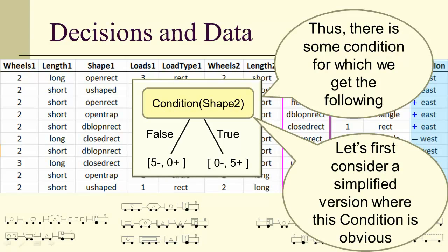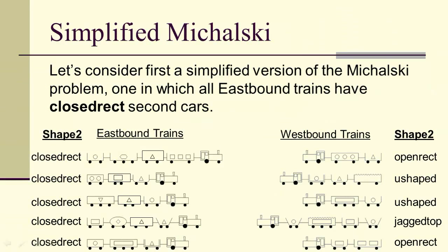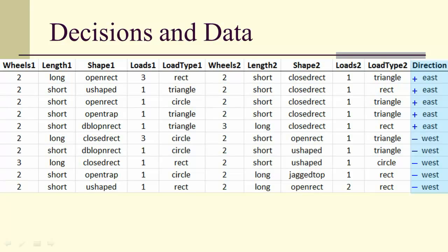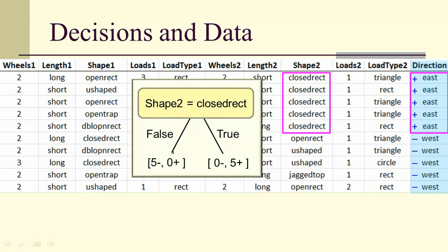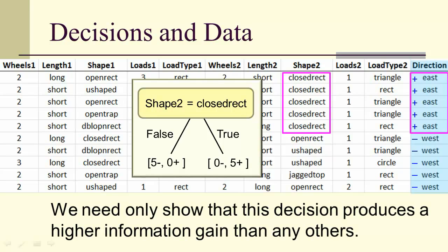The condition is going to be a little hard to come up with, so we're going to look first at a simplified version where the condition is obvious. In the simplified Mikowski version, each of the eastbound trains has a closed rectangle second car. Notice that shape two is closed rectangle for all the eastbound and none of the westbound. So if we can show that this gives us a higher information gain than any of the other choices, then we'll have shown that this is the best means of classifying eastbound versus westbound.